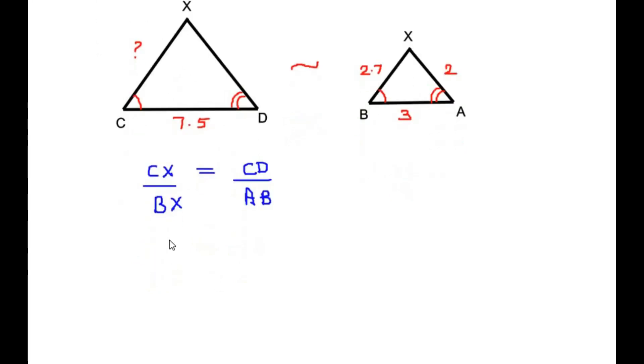CX over BX, where BX value is 2.7, equals 7.5 over AB which is 3. Let us cross multiply: 3 times CX equals 7.5 times 2.7.